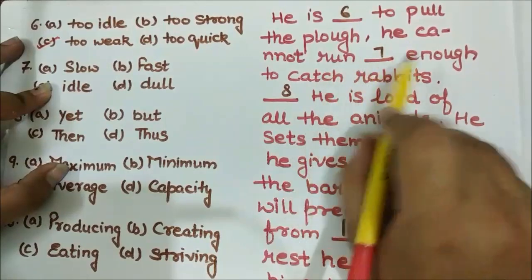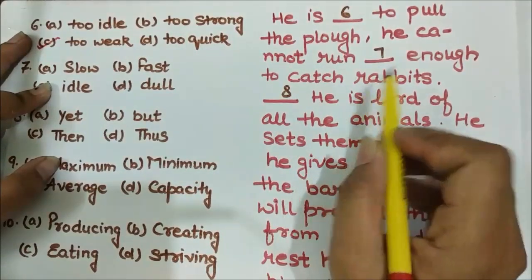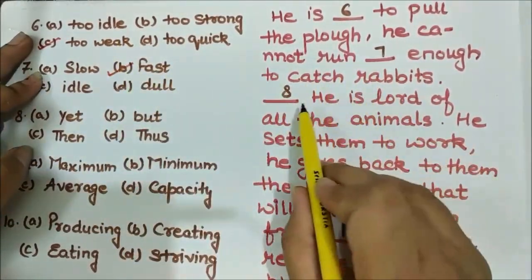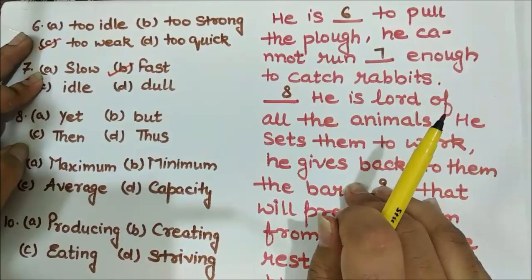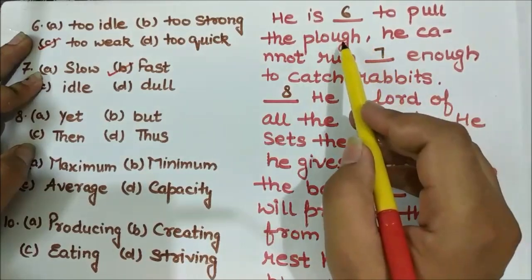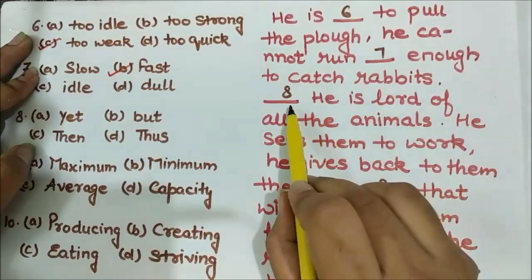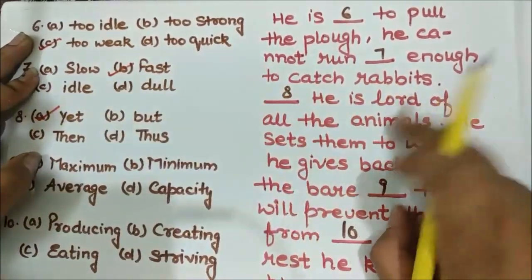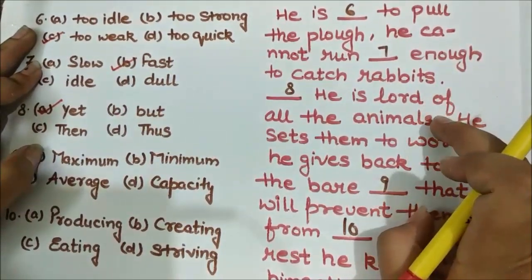The seventh blank: 'He cannot run ___ enough to catch rabbits.' You know how fast rabbits run, so the answer is 'fast' — fast enough to catch rabbits. The eighth blank: '___ he is lord of all the animals.' Man is not able to do things animals can do — plowing, he is too weak; catching rabbits, he is not fast enough. And still, 'yet' he is lord of all the animals. Despite these limitations, man is lord of all the animals.